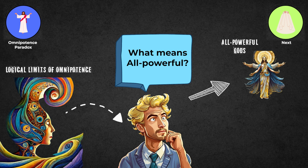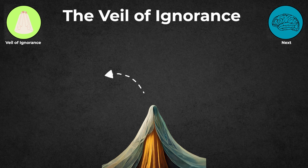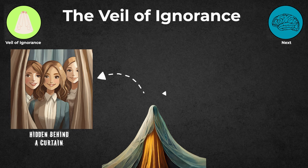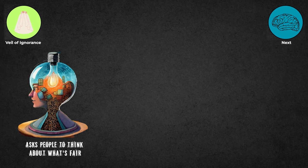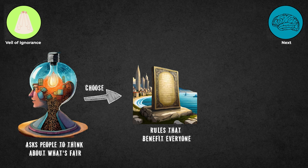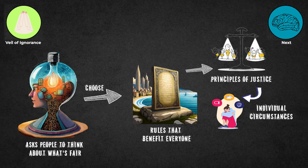The Veil of Ignorance: Imagine a scenario where people are hidden behind a curtain, not knowing anything about their own talents or how rich or poor they are. They have to come up with rules for society without knowing anything about themselves. This exercise asks people to think about what's fair without knowing their own situation. They would choose rules that benefit everyone, making a fair society. It prompts us to consider principles of justice that benefit everyone, regardless of their individual circumstances, and encourages empathy and fairness in social decision-making.